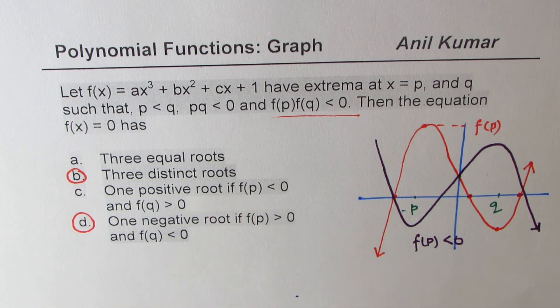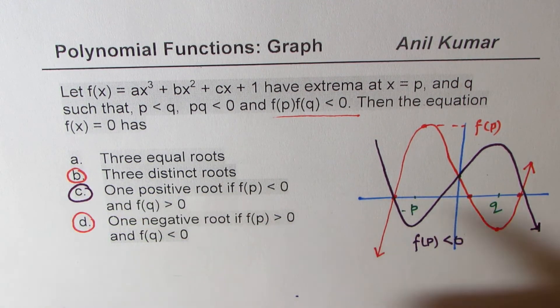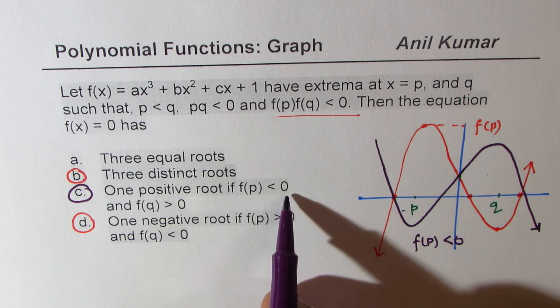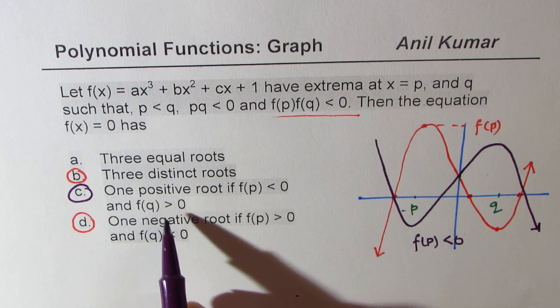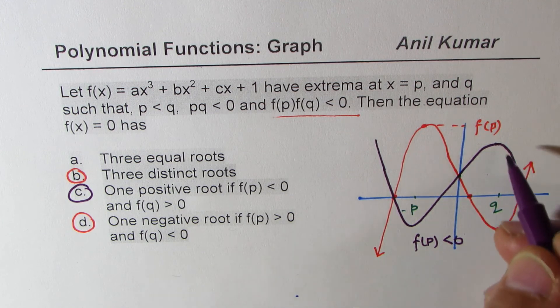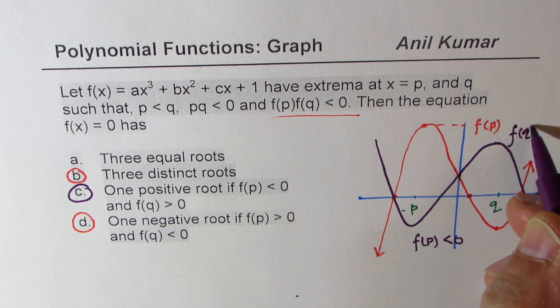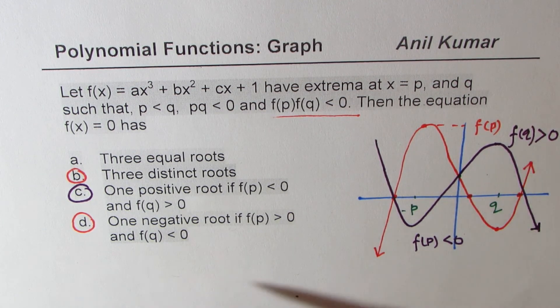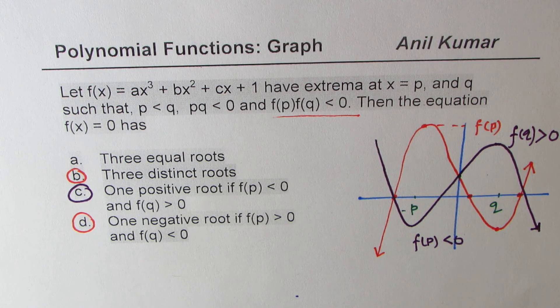1 positive root, that is correct. If f(p) is less than 0 and f(q) is greater than 0, you see that scenario. So here, f(q) is greater than 0. So that is also satisfying. So option b, c, and d, all three of them are correct in this particular case.